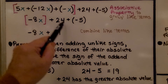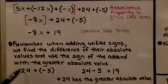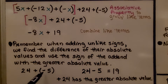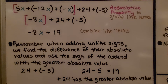When adding unlike signs, we find the difference of their absolute values and use the sign of the addend with the greater absolute value. So we have 24 plus negative 5. The absolute value of 24 is 24, and the absolute value of negative 5 is 5. So we have 24 minus 5, which is 19. Positive 24 has the greater absolute value, so we have positive 19.